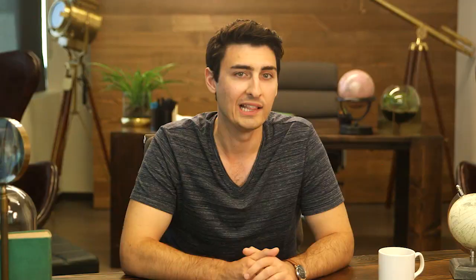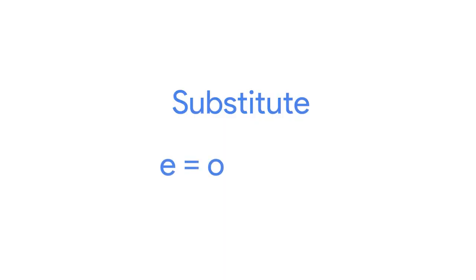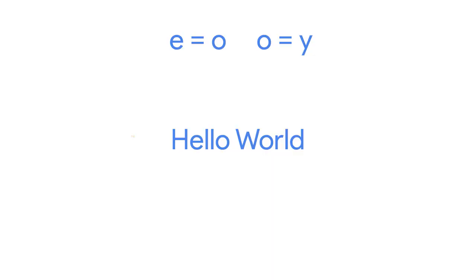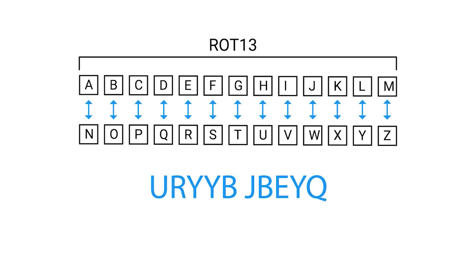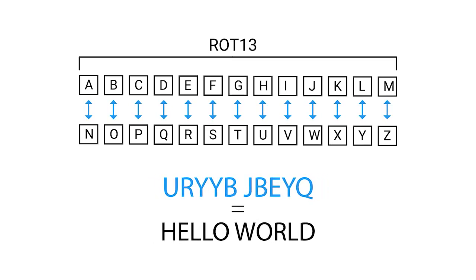Let's look at a simple cipher where we substitute E for O and O for Y. We'll take the plaintext 'hello world' and feed it into our basic cipher. The resulting ciphertext is 'Holly we're old.' It's pretty easy to decipher, since this is a very basic example. There are much more complex and secure ciphers or algorithms that we'll cover later in this section.